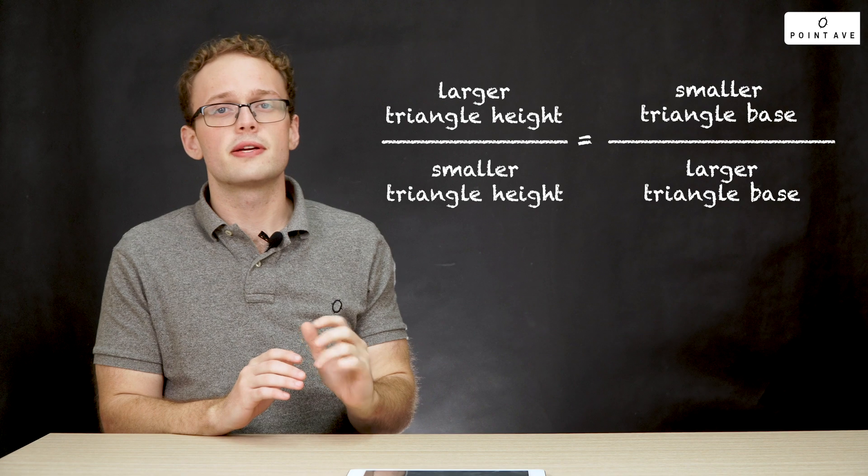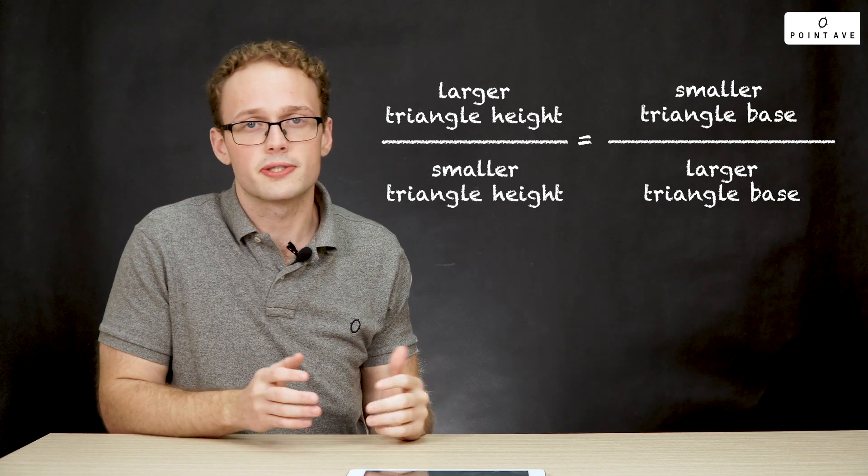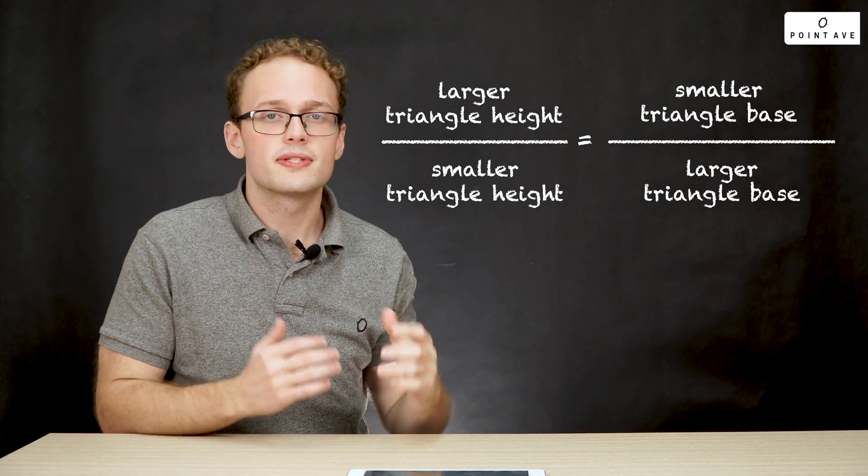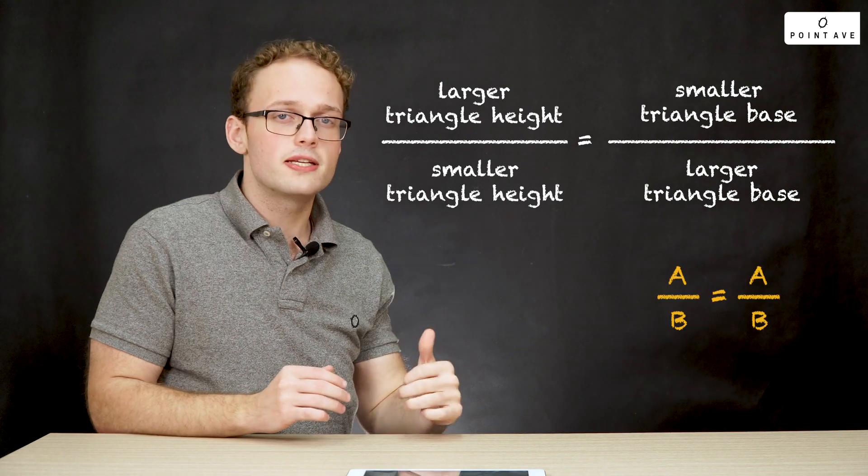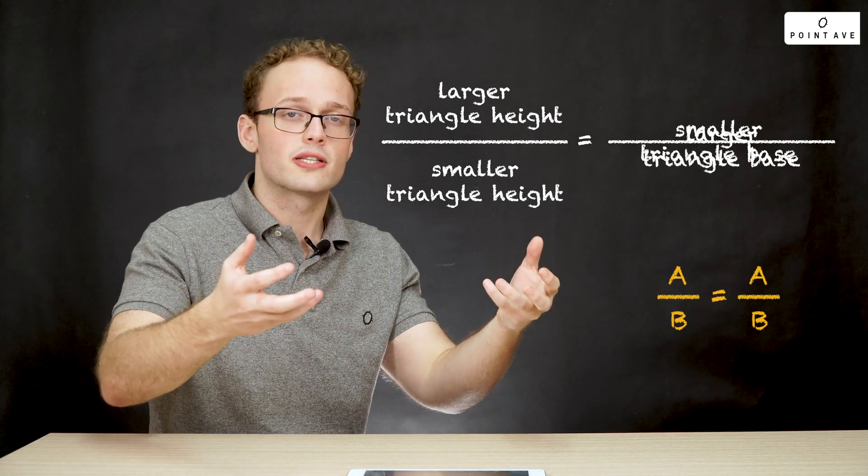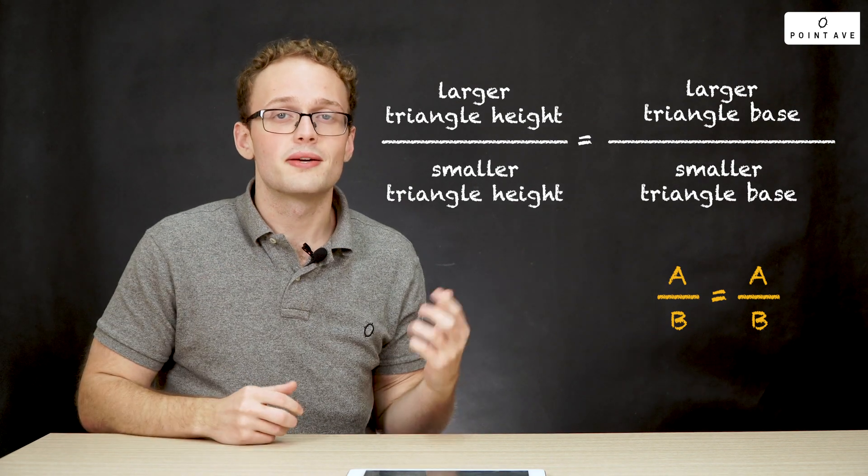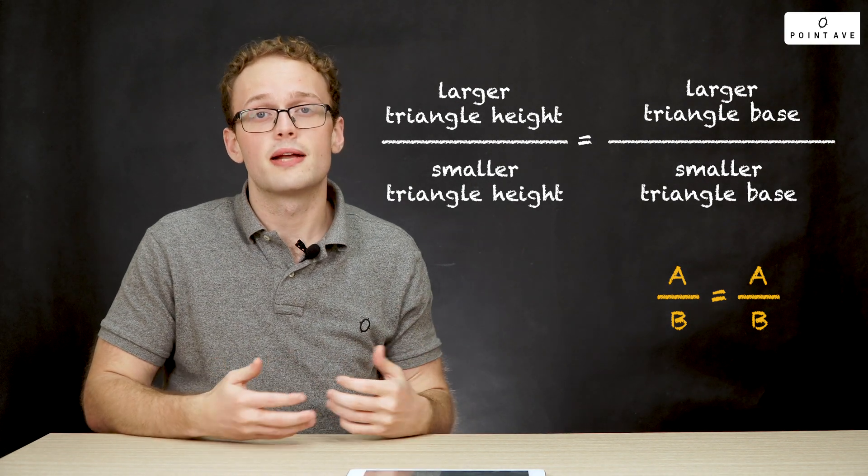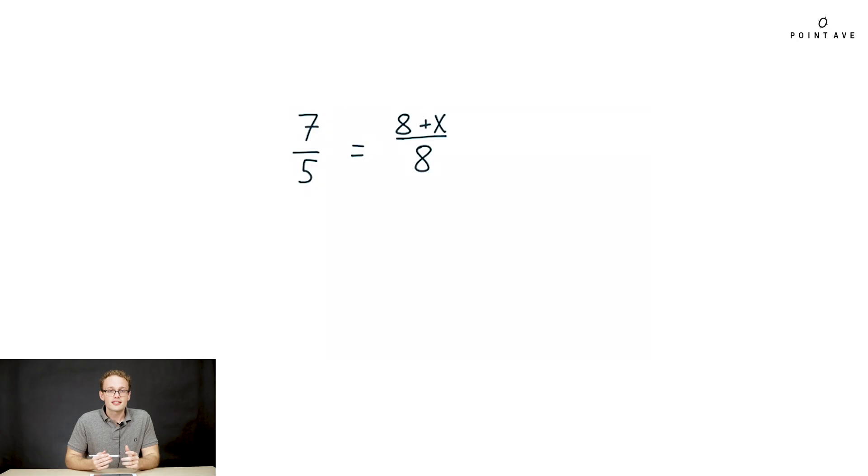Well the lesson here is that our ratios always need to match in a proportion. We have like over like but we also need to follow this model of a over b equals a over b. So in some sense our numerators need to match in some way as well as our denominator. And that will give us a proportion that makes sense and we're able to solve for an answer. This gives us the correct proportion: 7 over 5 equals 8 plus x over 8.